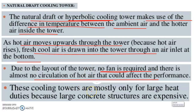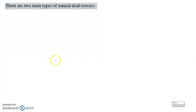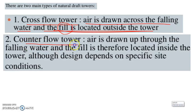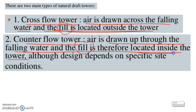These cooling towers are mostly used only for large heat duties because large concrete structures are expensive. There are two types of natural draft cooling towers. Number one is the cross flow cooling tower, where air is drawn across the falling water and the fill is located outside the tower. Number two is the counter flow tower, where air is drawn up through the falling water and the fill is located inside the tower.